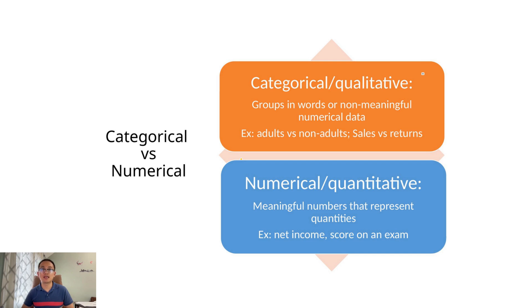Numerical data represents actual quantities. These are real numbers you can add, subtract, multiply, or divide, like transaction amounts, age, or test scores.